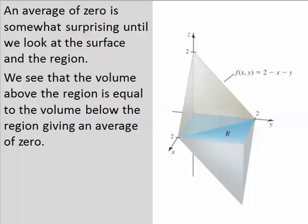An average of zero is somewhat surprising until we look at the surface and the region. We see that the volume above the region is equal to the volume below the region, giving an average of zero.